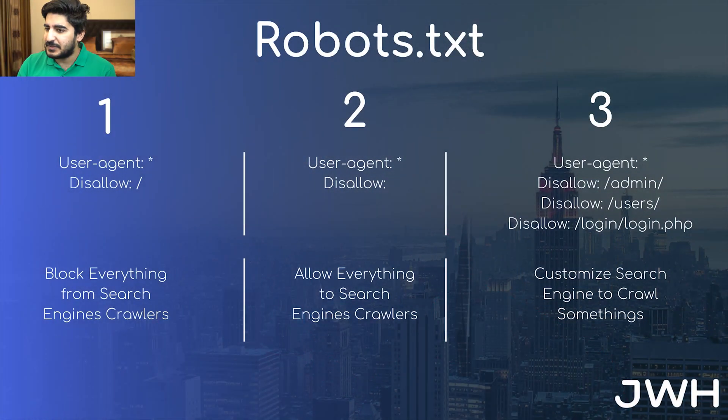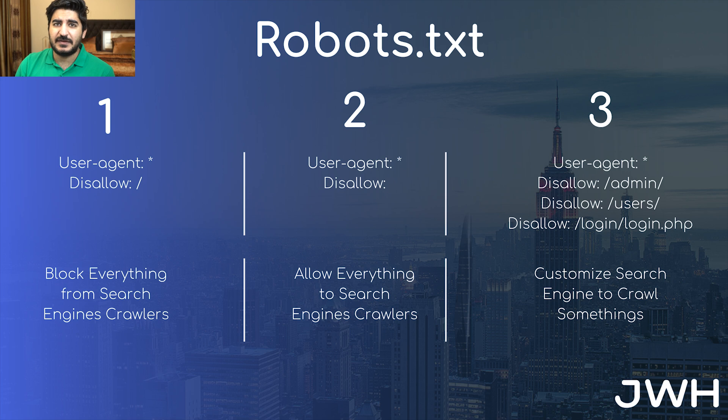The second rule is 'User-agent: *' with 'Disallow:' left empty. This means you allow the search engine to crawl and index your entire website. The problem is that if you have a dynamic URL or a login URL that you don't want to show in search engines — or thin pages you don't want to serve — if this rule is enabled, those pages will be indexed.